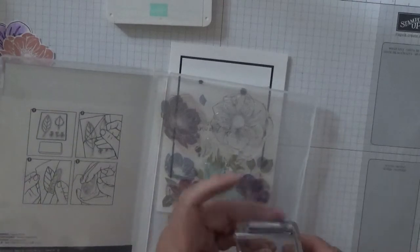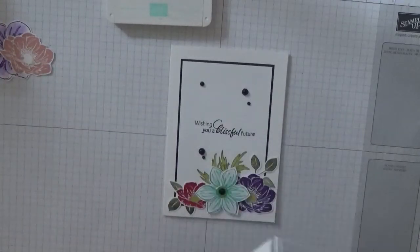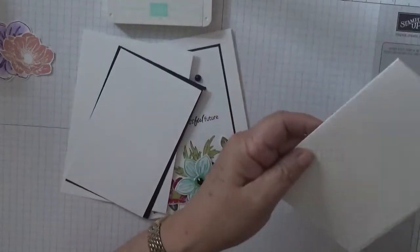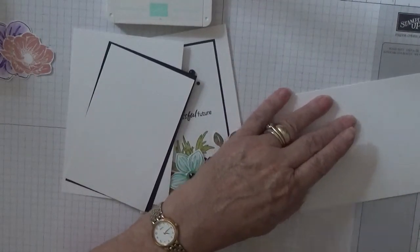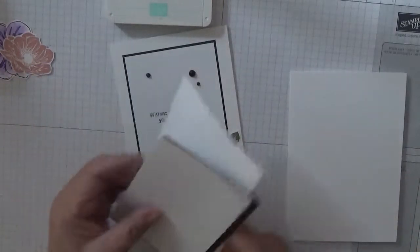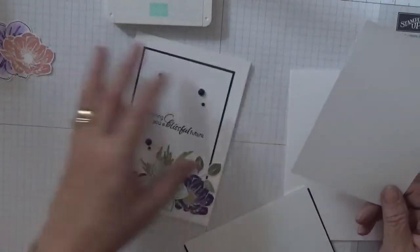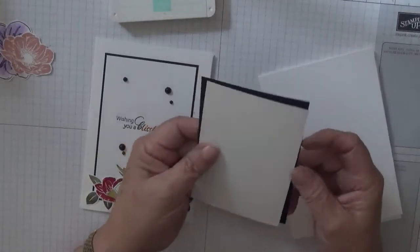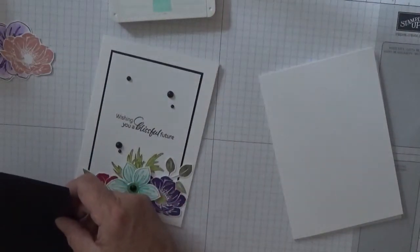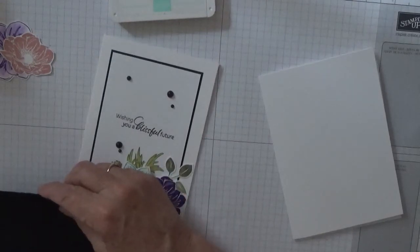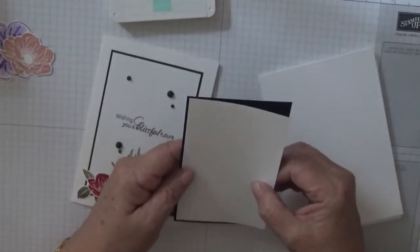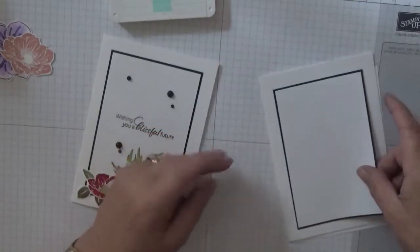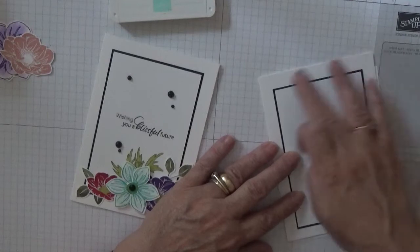To get started you'll need a card base of eight and a quarter by five and seven eighths scored at four and one eighth and folded in half. A piece of white card stock at five and five eighths by three and seven eighths for the inside. A piece of basic black at three and a quarter by five inches, and then a piece of white at three and one eighth by four and seven eighths which will just sit and leave us a nice wide border all the way around.